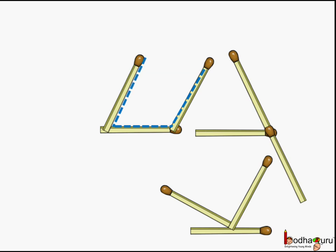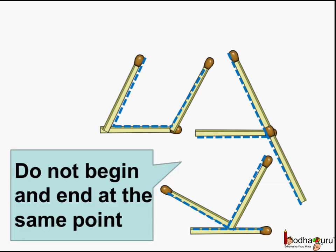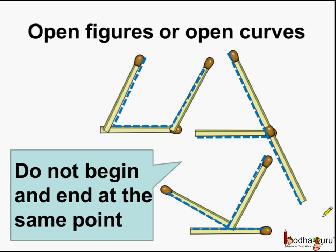This figure can be drawn this way, this figure can be drawn this way, and this figure can be drawn this way. All these figures do not begin and end at the same point. It begins here but it ends here — the end points are different. Such figures which do not begin and end at the same point are called open figures or open curves.